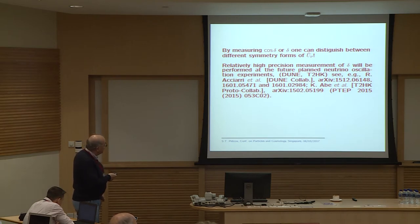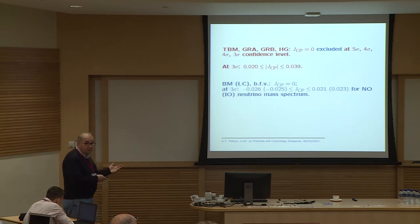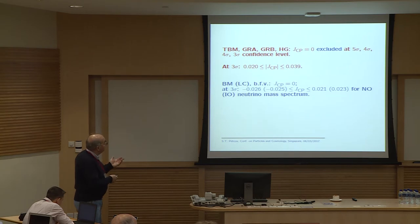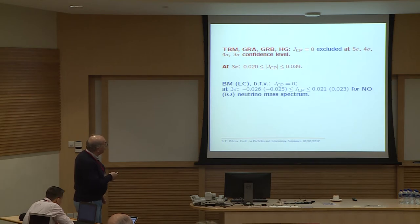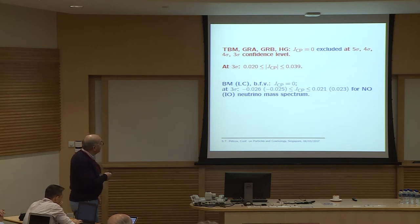Relatively high-precision measurements of δ will be performed at future planned neutrino oscillation experiments JUNO and T2HK. A chi-square analysis based on these predictions for delta shows that for four underlying symmetry cases — tri-bimaximal, golden ratio A, golden ratio B, and hexagonal — the absence of CP violation effects is excluded at very high confidence level, and J_CP at 3σ is predicted to be between 0.02 and 0.04, predicting large CP violation effects. In contrast, for bimaximal mixing, CP violation effects can be strongly suppressed.